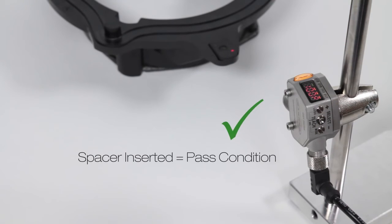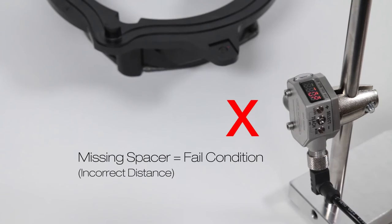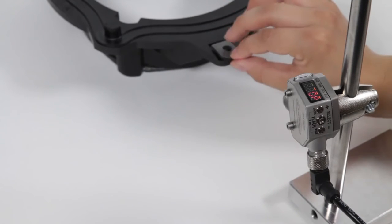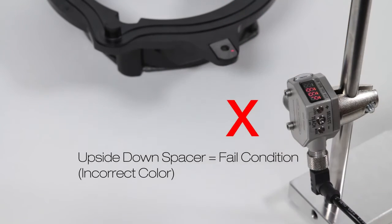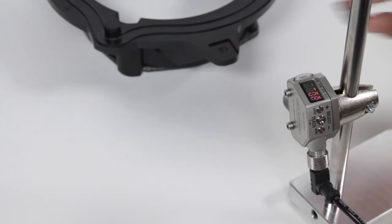The Q4X can pass the correctly seated spacer but rejects a missing spacer, upside down spacer, or two spacers stacked on top of each other.